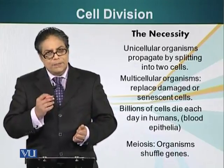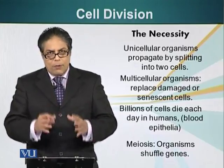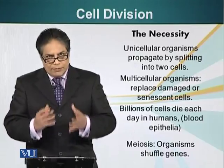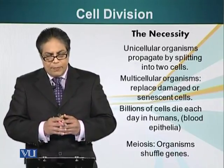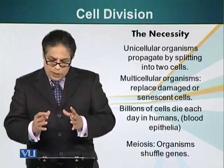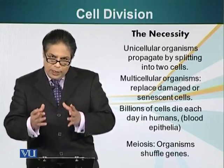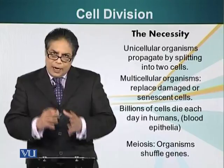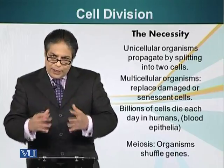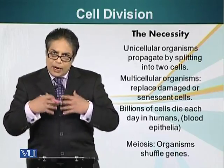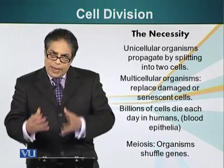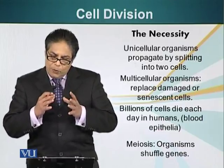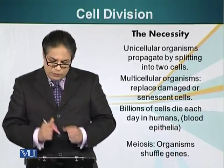Additionally, a special type of cell division called meiosis — we will talk about this process in more detail later on. This ensures the organism shuffles its genes, allowing different combinations and allowing natural selection to take place, selecting organisms with the best combination of genes.